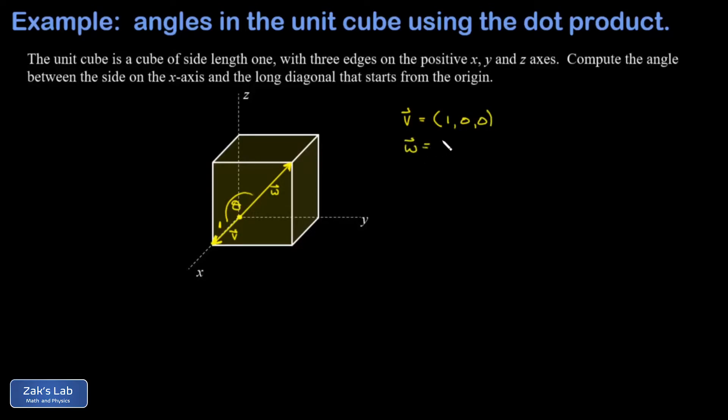The components of w take us from the origin one space in the x direction, one space in the y direction, and one space in the z direction. So it has components (1, 1, 1).